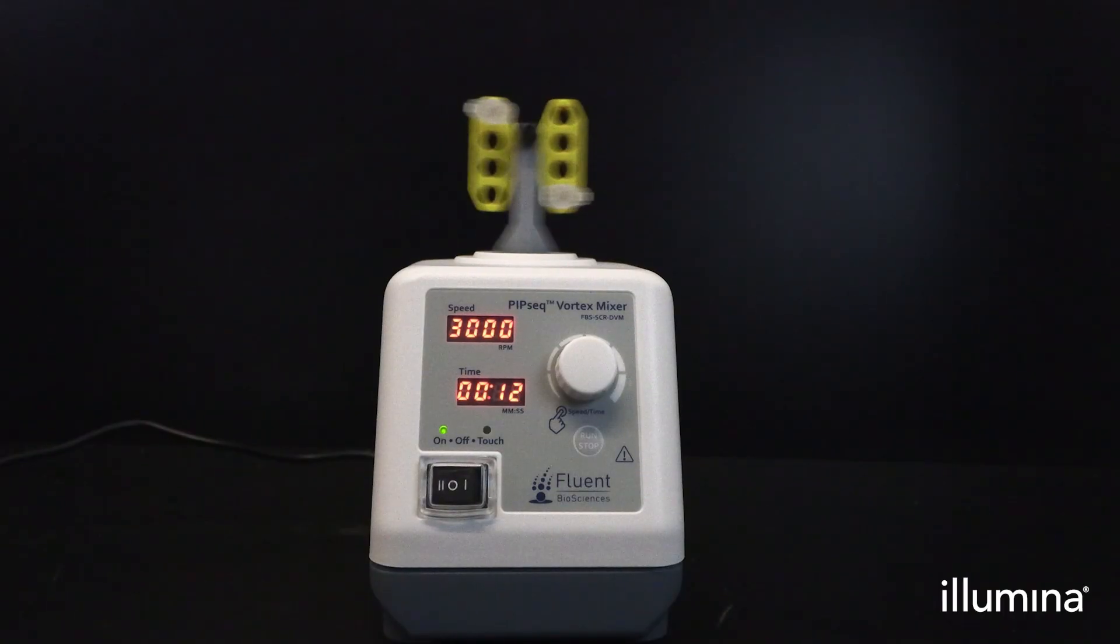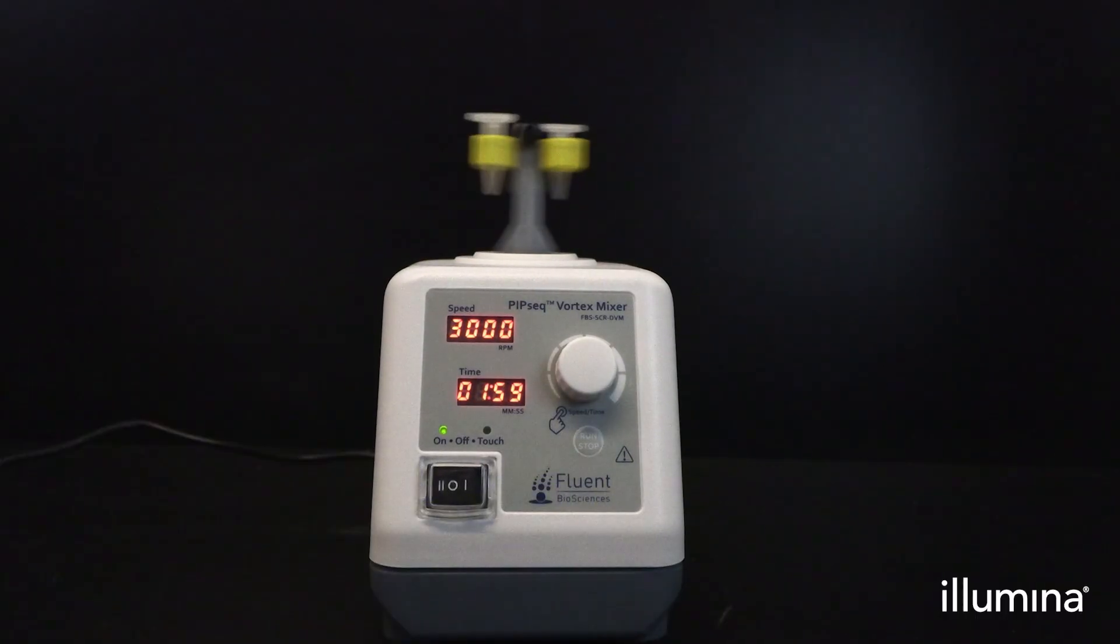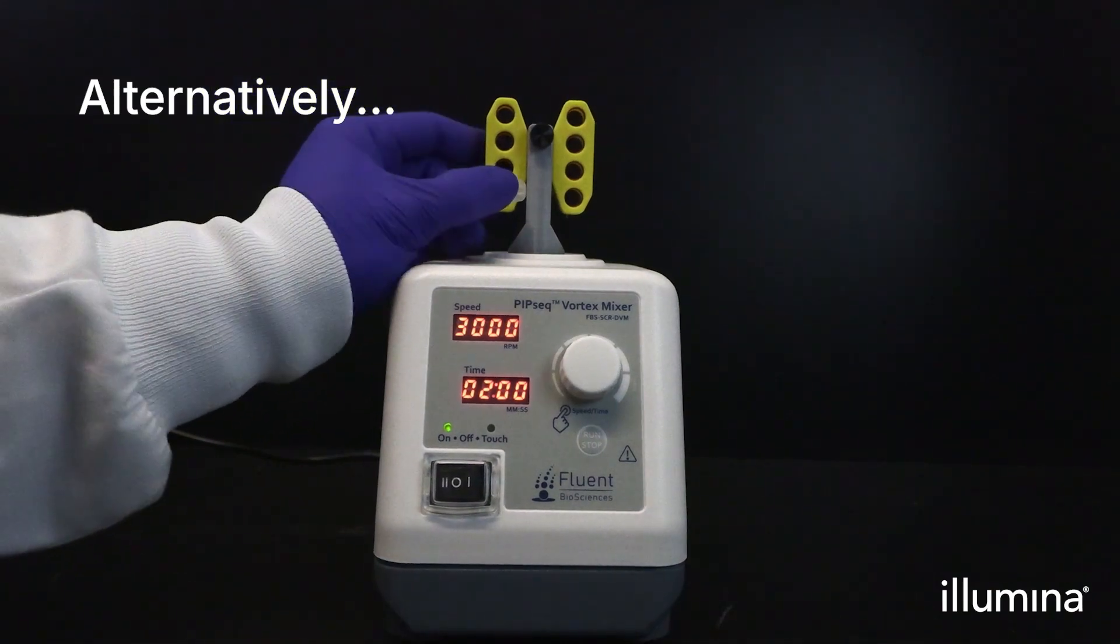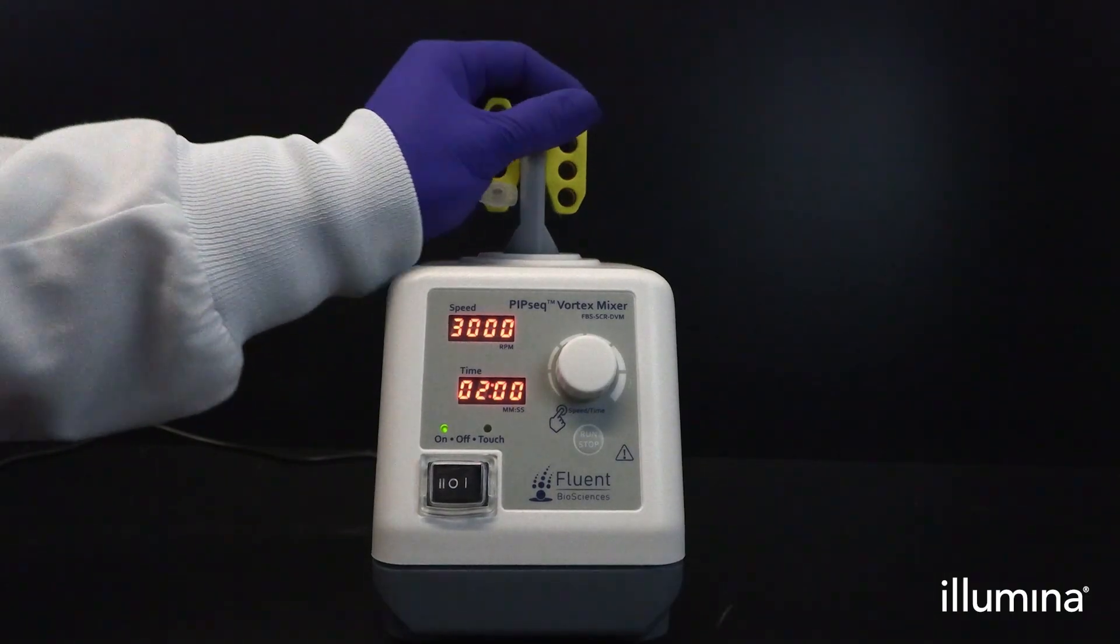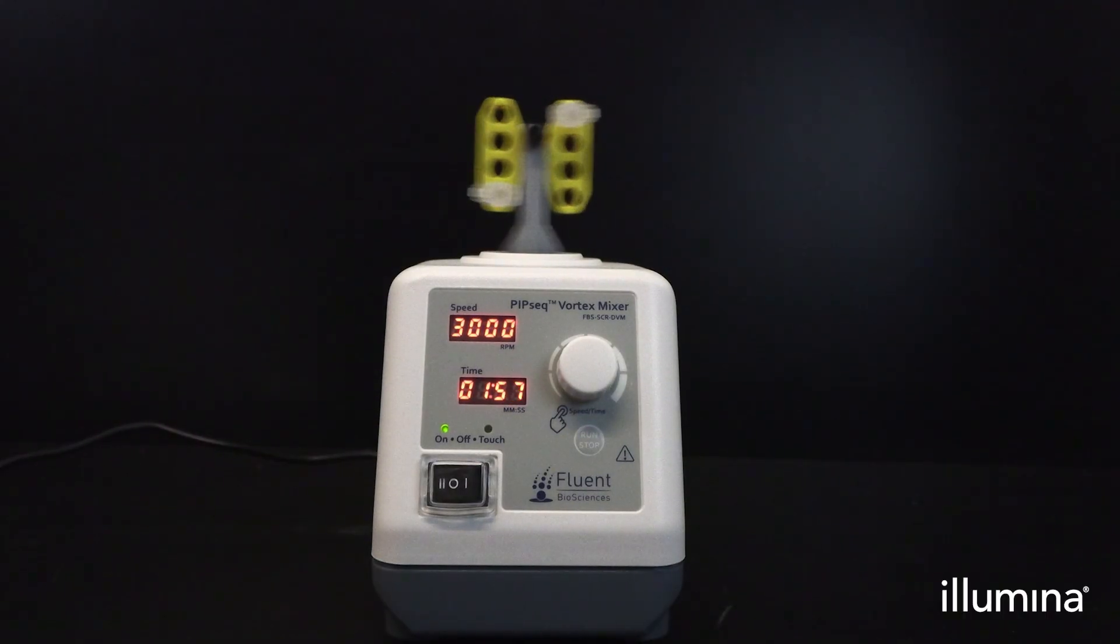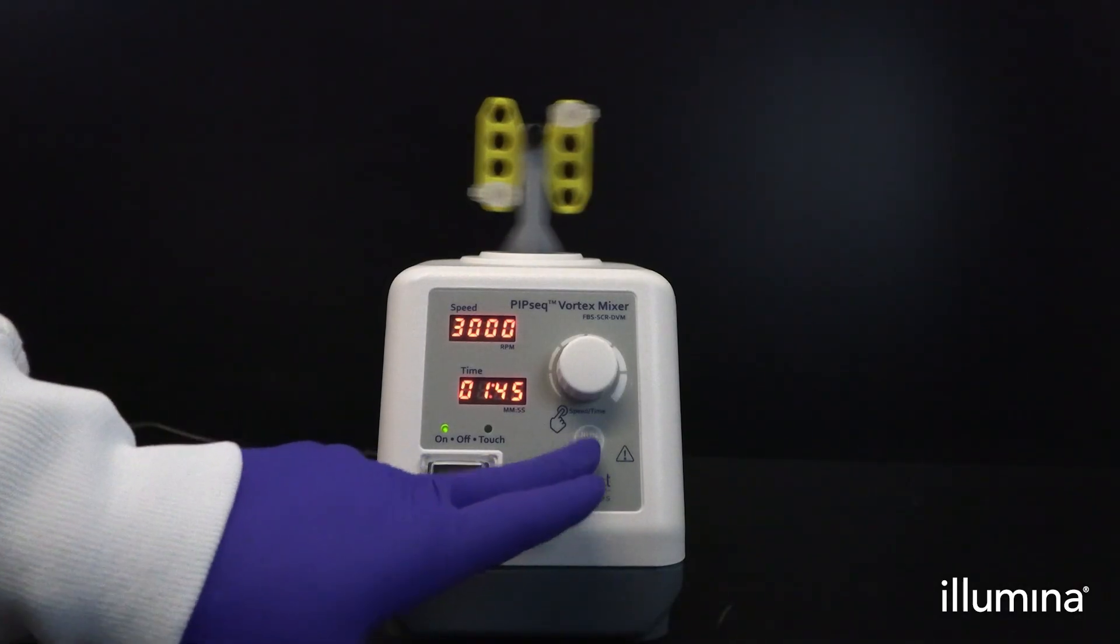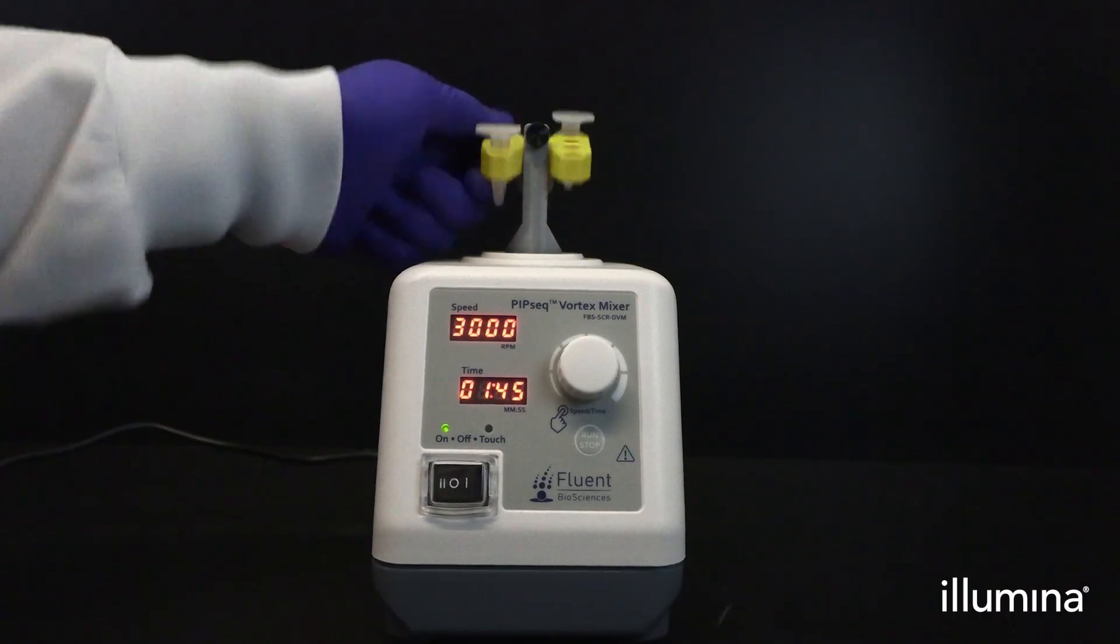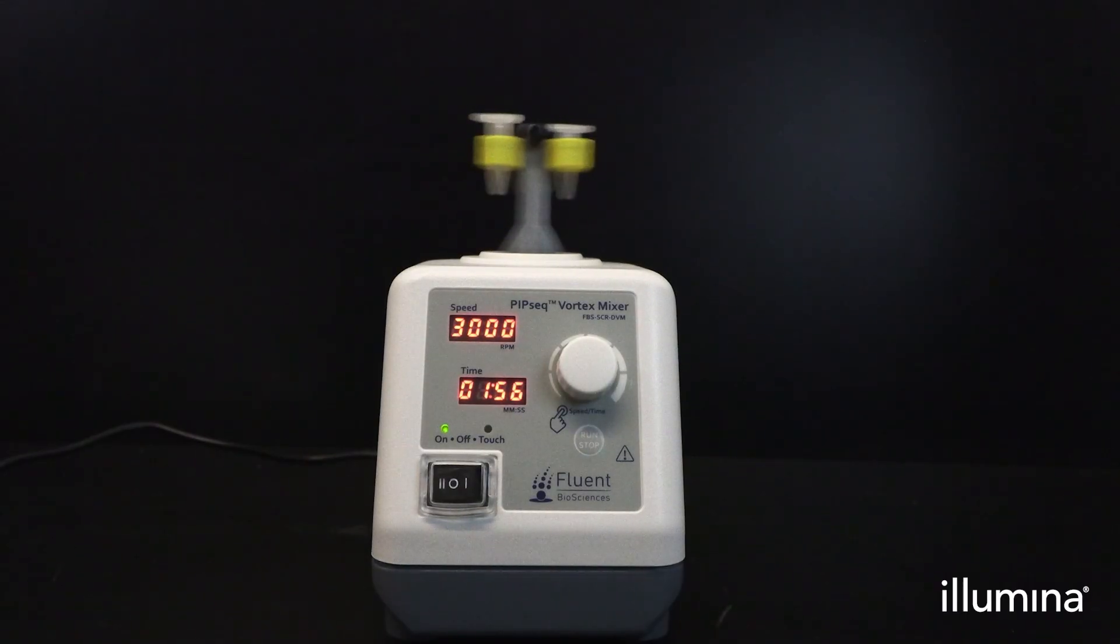Samples will be vortexed for 15 seconds in the horizontal configuration, followed by 2 minutes in the vertical configuration at 3000 RPM. For better vortexing efficiency, we recommend starting the timer at 2 minutes and stopping the vortex with 1 minute and 45 seconds remaining, or after 15 seconds of vortexing horizontally.